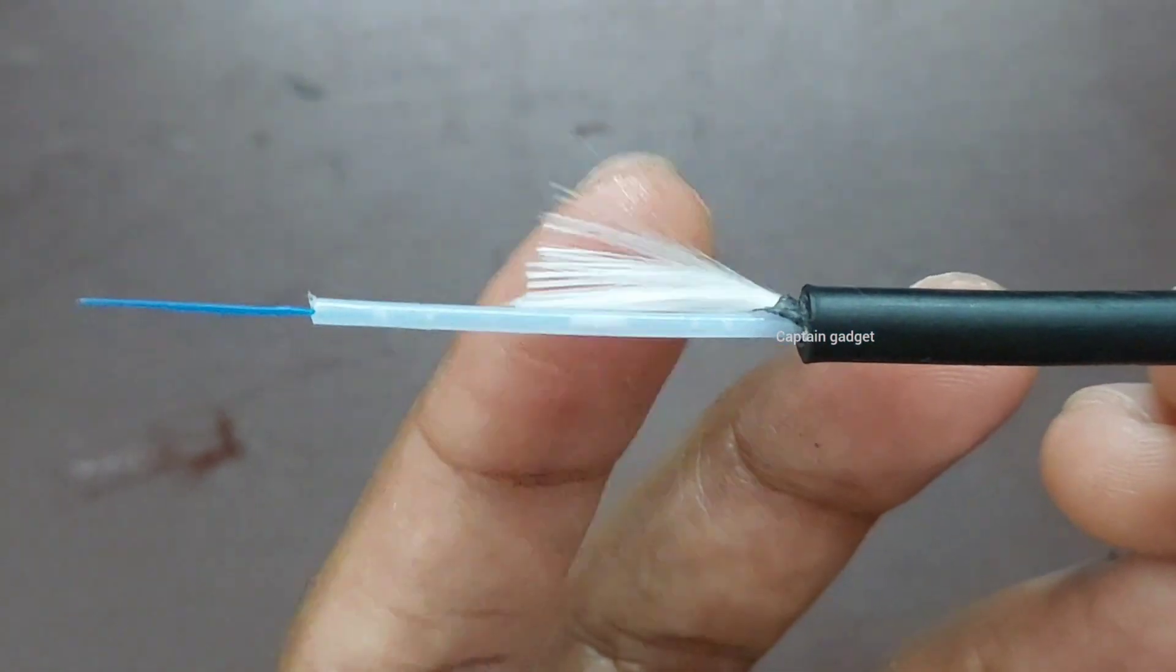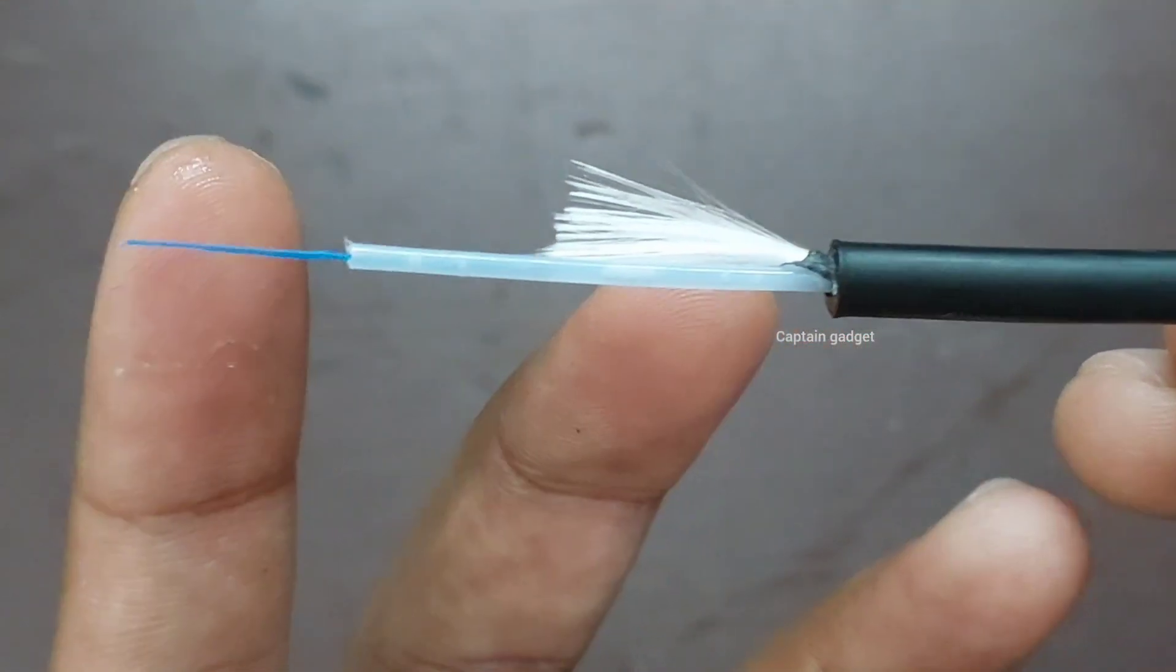The outer jacket, yarn, gel-filled buffer tube, and the fiber.